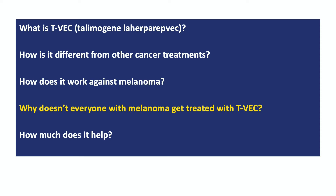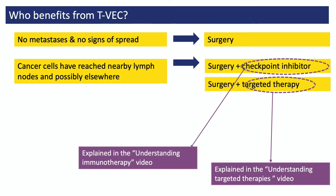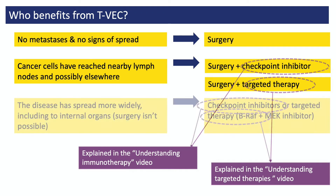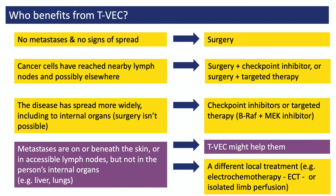You might wonder why TVEC isn't offered to everyone with melanoma. The answer is that for many people, other treatments would work better. If a person is diagnosed with a melanoma that hasn't shown signs of spread, surgery might be enough to cure them. If their disease has started to spread, they might need a checkpoint inhibitor or targeted therapy. If the disease has spread to internal organs, surgery probably won't help, but checkpoint inhibitors or targeted therapies often will. The people most likely to benefit from TVEC are those who have tumours on or underneath their skin and possibly inaccessible lymph nodes — crucially, it must be possible to inject these tumours. This is a relatively small and very specific group of patients.